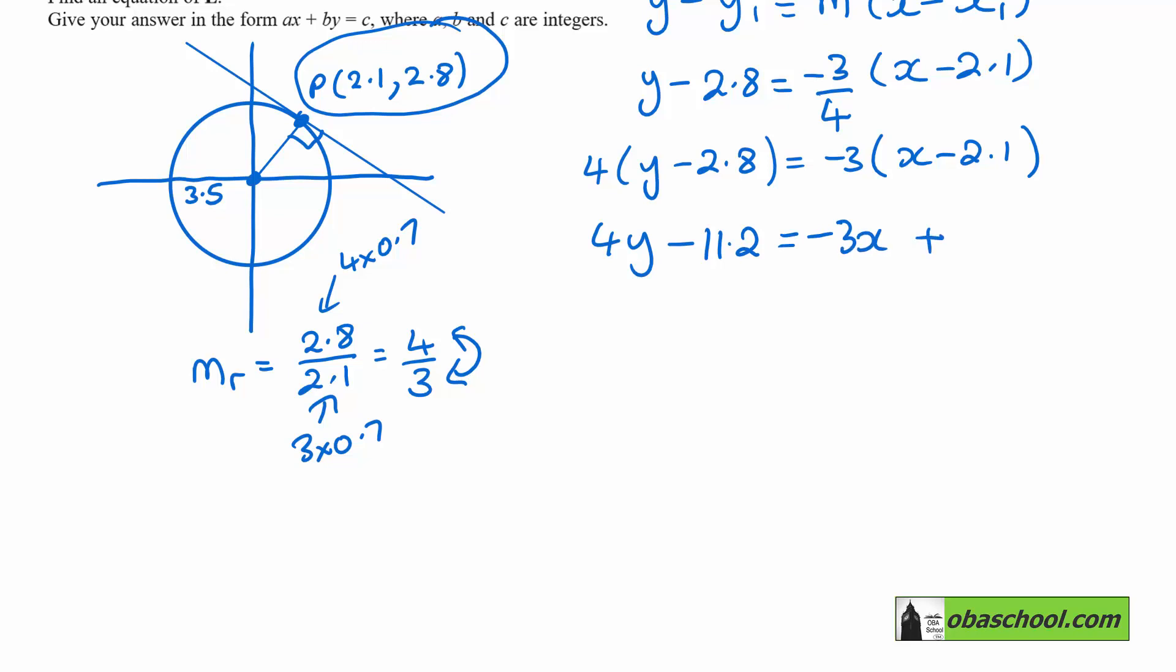That equals negative 3x plus 3 times 2.1, which is 6.3. So we have 3x plus 4y equals 11.2 plus 6.3.